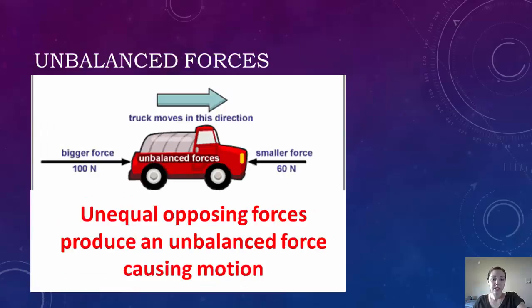For unbalanced force, on this side we have a smaller force of 60 newtons and a bigger force of 100 newtons. So unequal opposing forces produce an unbalanced force which causes motion. If you have the bigger force on this side, it's going to propel the truck to the right. So the truck is in motion with unbalanced forces.